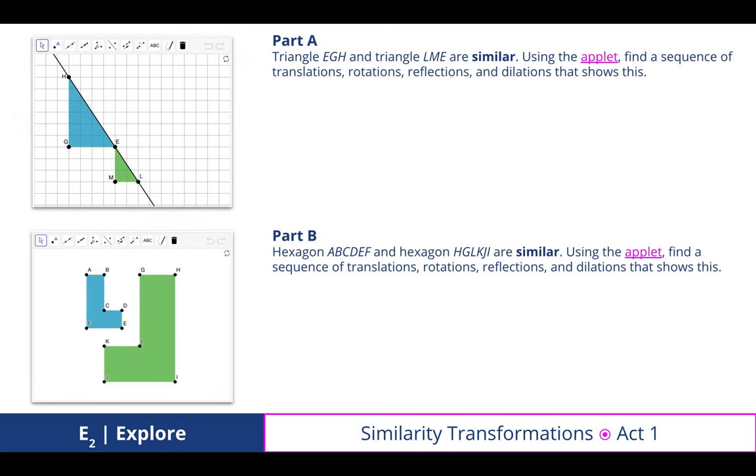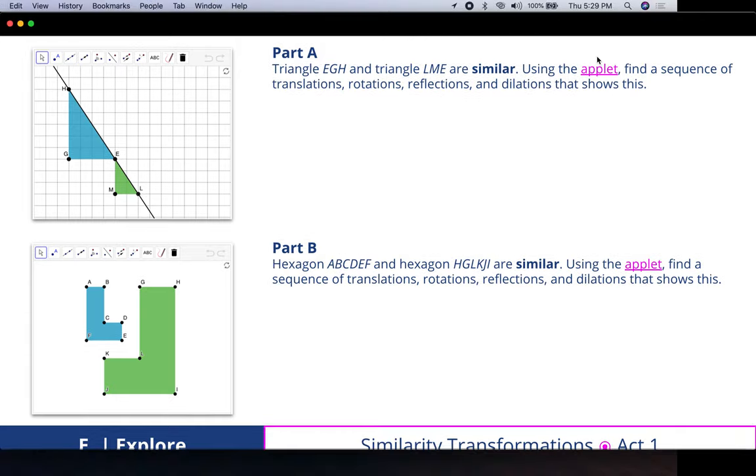In part A, triangle EGH and triangle LME are similar. Using the applet, find a sequence of translations, rotations, reflections, and dilations that show this.